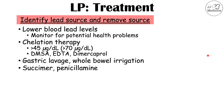Overall, treatment is related to the lead level. It's important to identify and remove the source of lead, removing the individual from the source if possible. If the lead level is significant — greater than 45 micrograms per deciliter — chelation therapy is going to be important.